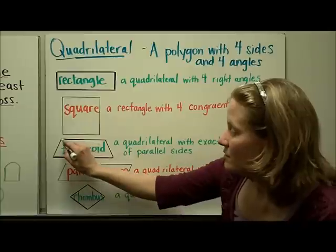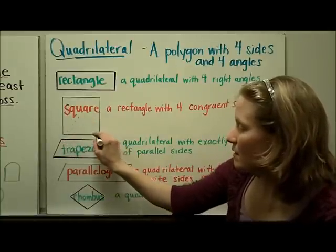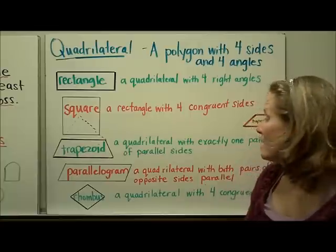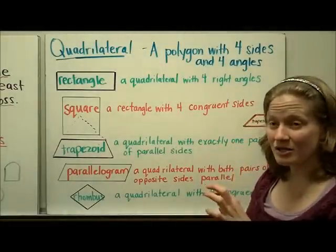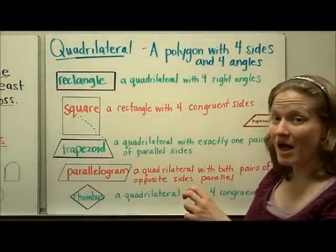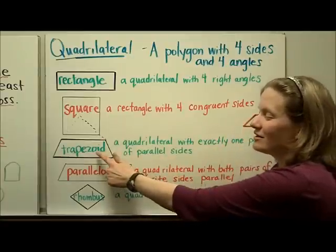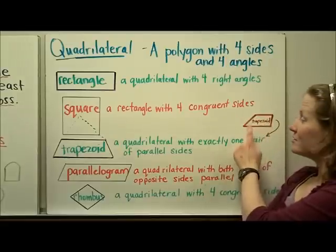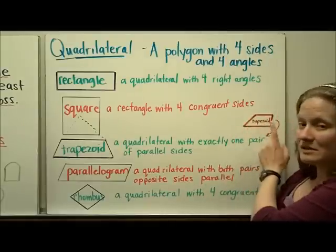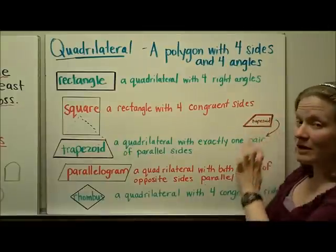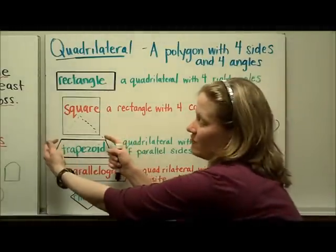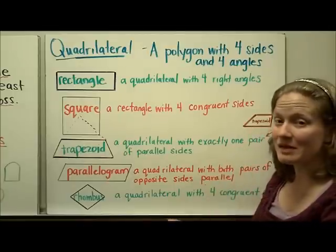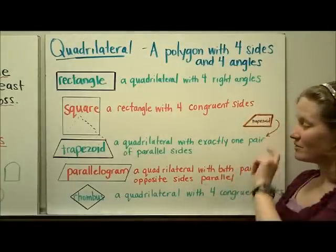If you extended the non-parallel sides, they would eventually intersect. So a trapezoid has exactly one set of parallel sides. In our fraction pattern blocks, we had a trapezoid that doesn't look like the traditional trapezoid — it has one pair of parallel sides, but one side is slanted and one side is straight forming a right angle. A trapezoid doesn't have to have two slanted sides; what's important is that it has one pair of opposite parallel sides.